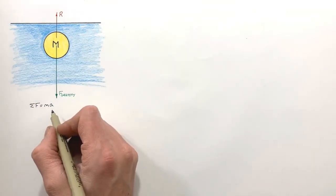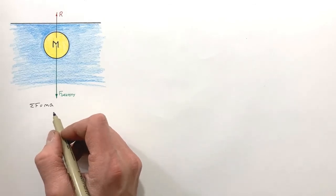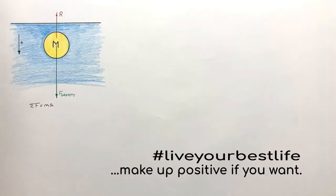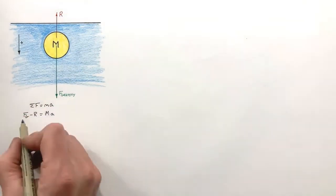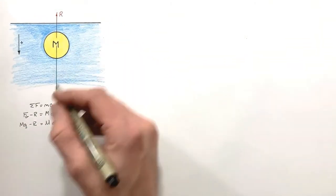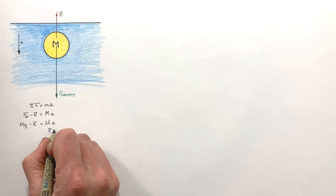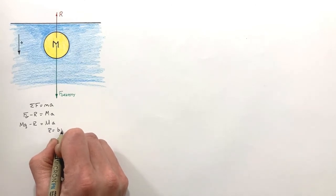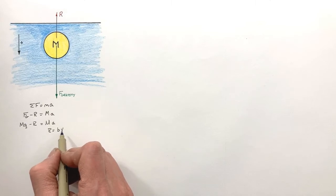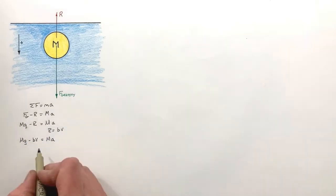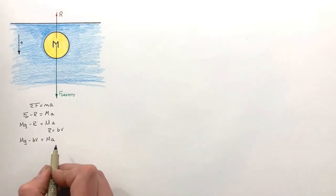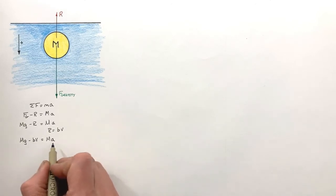In this problem, I'm going to say that downward is the positive direction. Putting these two forces into Newton's second law and expanding out F_G, because this ball is traveling through water, the resistive force is equal to bV — the important thing is it is proportional to the velocity of the ball. Substituting that in, we get an equation which relates the velocity of the ball to its acceleration.